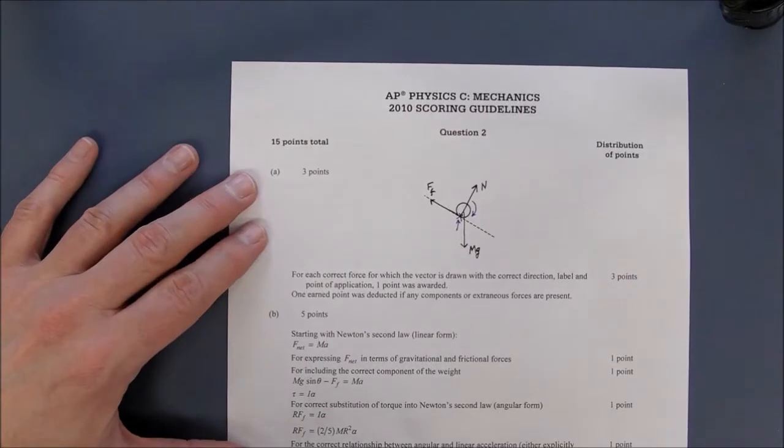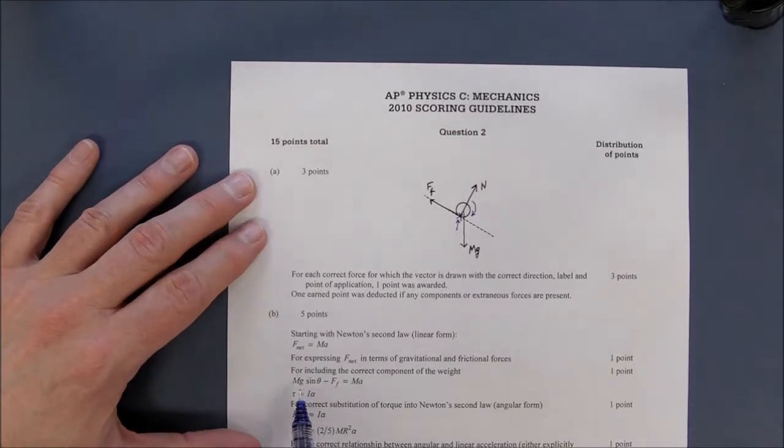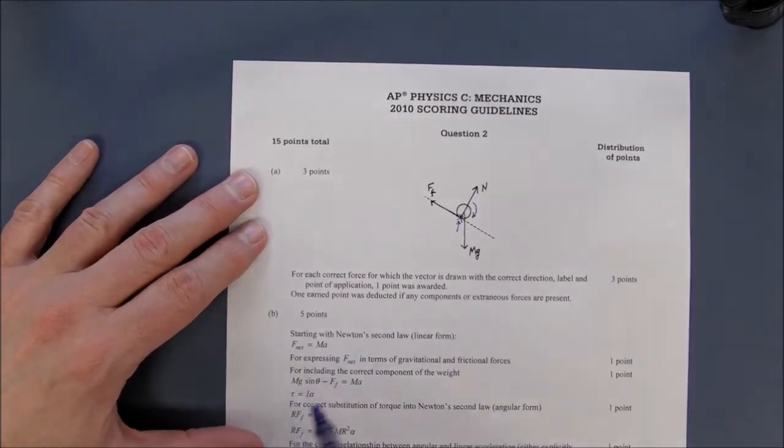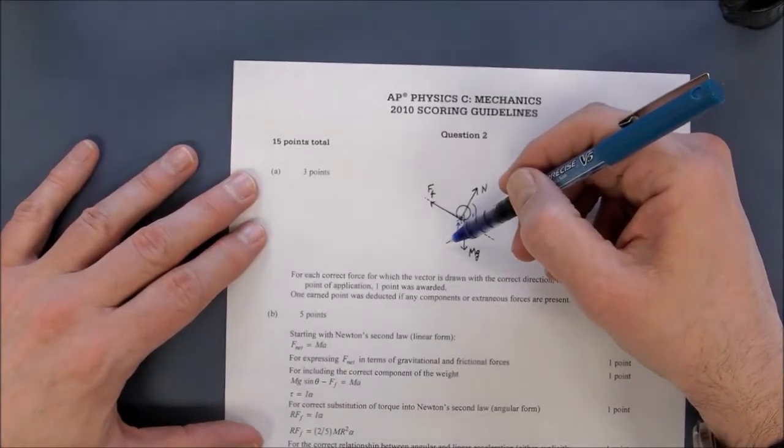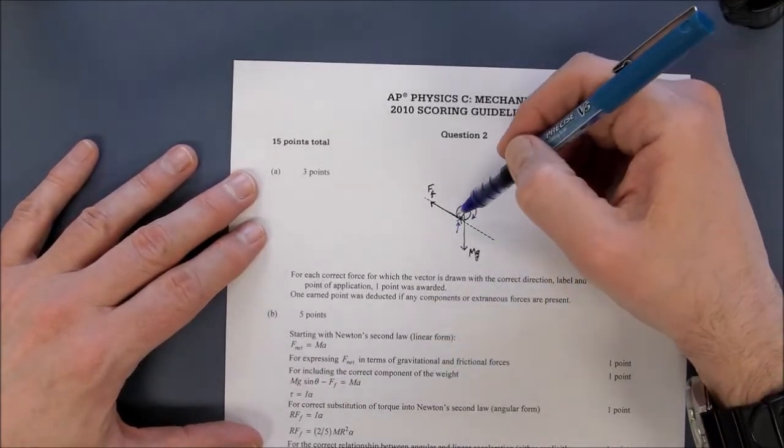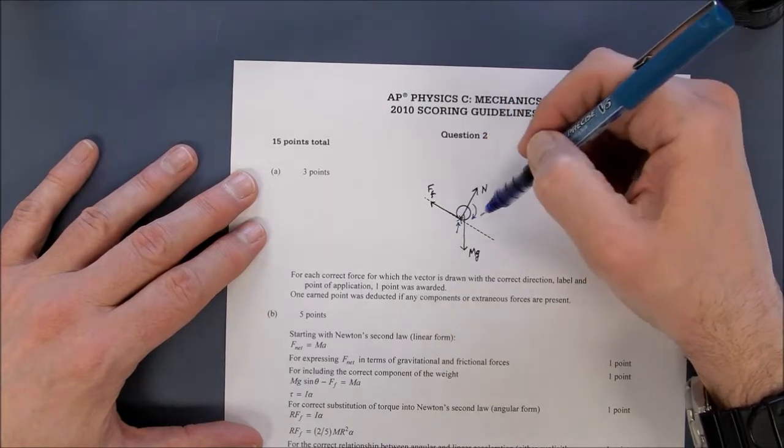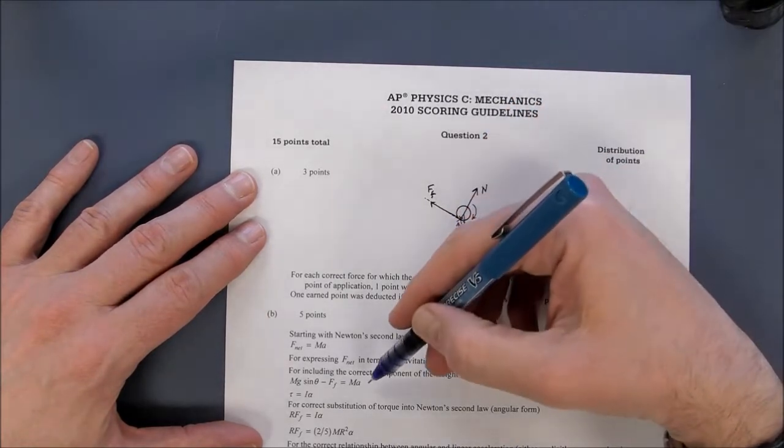So this solution here for the application of Newton's second law, you've got an mg sin theta term going down the inclined plane and the force of friction term going up, and that has to equal ma. That is correct.